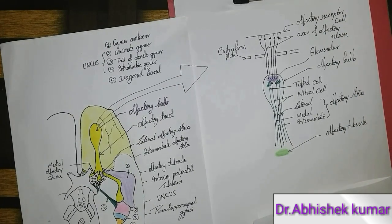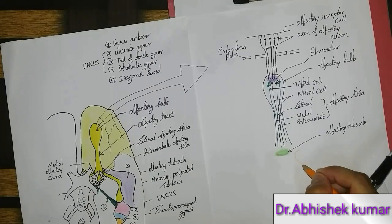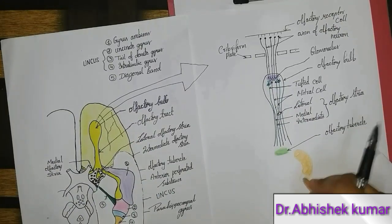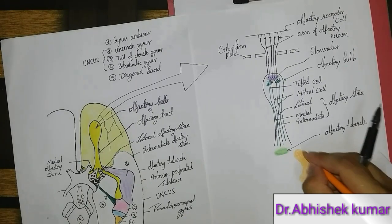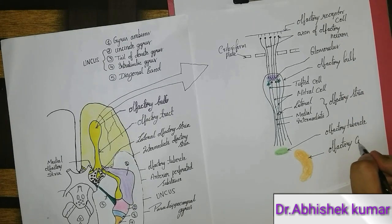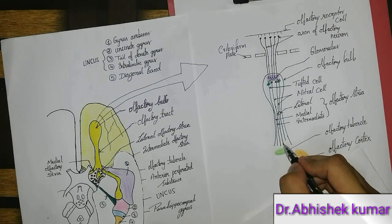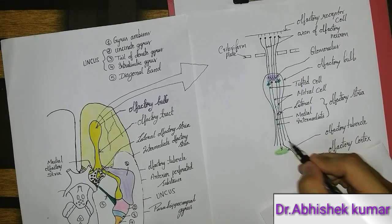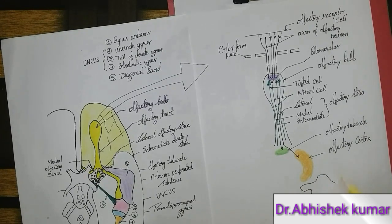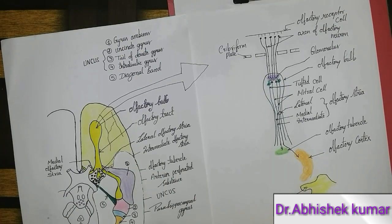With the orange pencil I am drawing the olfactory cortex. This all together is the olfactory cortex. The intermediate olfactory stria will terminate in the tubercle, and the lateral olfactory stria will terminate in the olfactory cortex. This structure I am making now is the uncus, labeled with the yellow pencil.